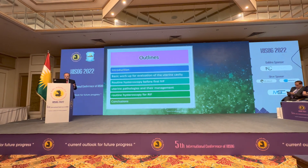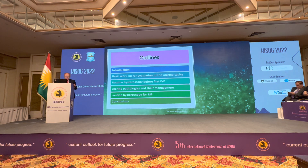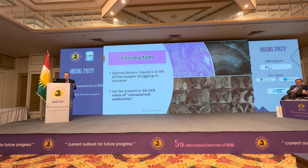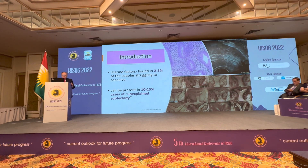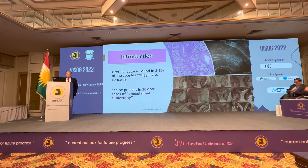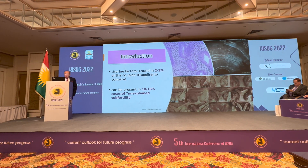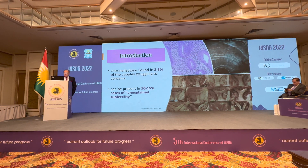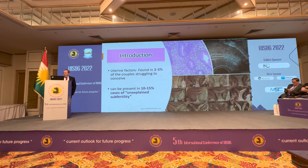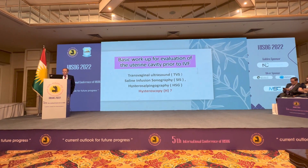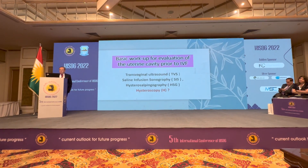I will cover uterine pathologies and their management, routine hysteroscopy before recurrent implantation failure, and conclusion. The uterine factor is found in 2–3% of couples struggling to conceive.